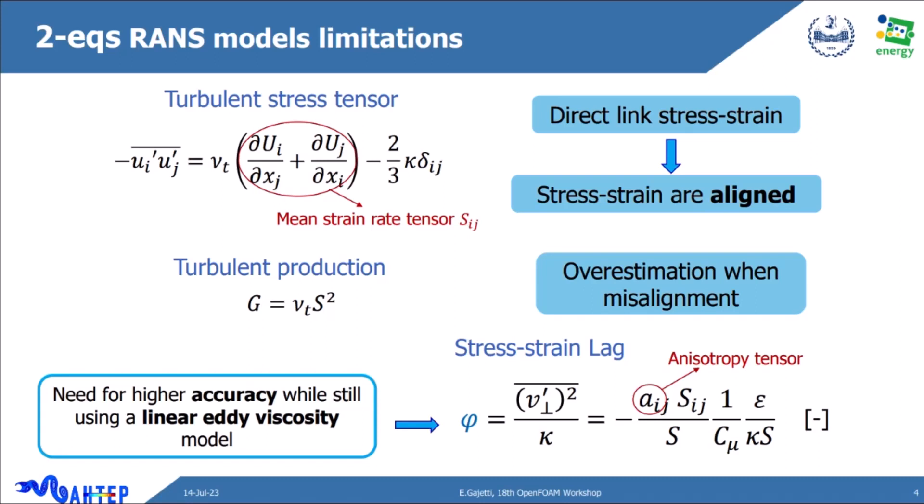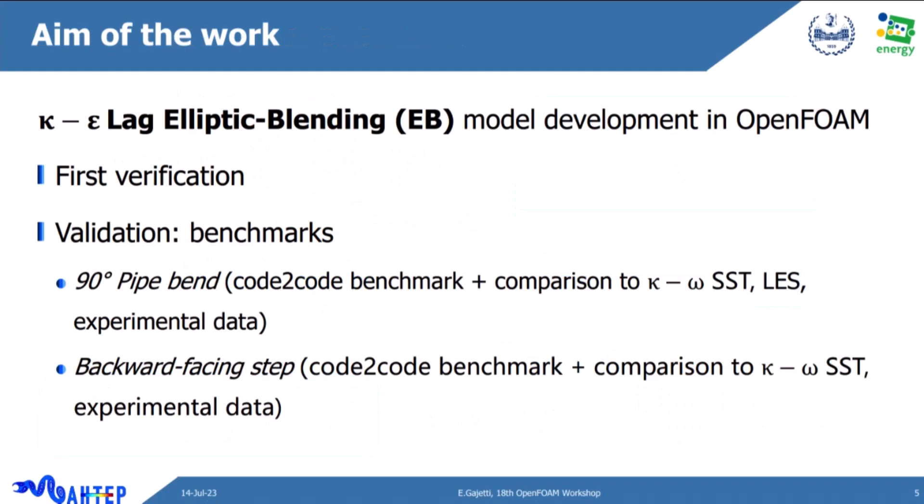This variable phi is dimensionless. The aim of my work is the development of a model that takes into account this lag between stress and strain, plus an additional elliptic blending at wall of the variables, implemented in OpenFOAM. This includes verification and validation through benchmarks, code-to-code comparisons, and comparison with other RANS equations and, where available, experimental data.